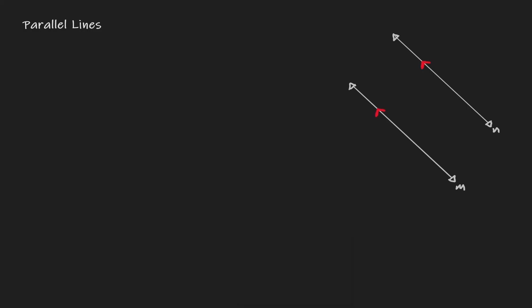Now let's come back to the scenario. So what if we have these two parallel lines, and then we draw a new line that actually intersects those two lines? Let's do that in blue here. This type of line is something that we define as a transversal line — it is a line that traverses two lines. In this case, it is a line that intersects those two parallel lines.